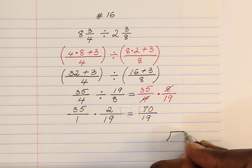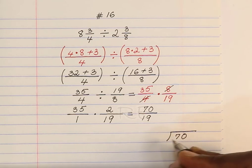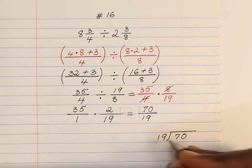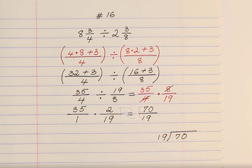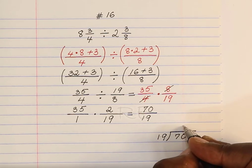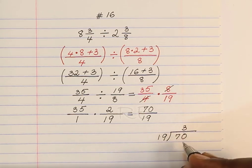Now we need to divide to write the fraction as a mixed number. How many times 19 goes evenly into 70? 3 times.